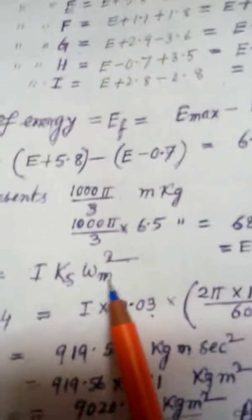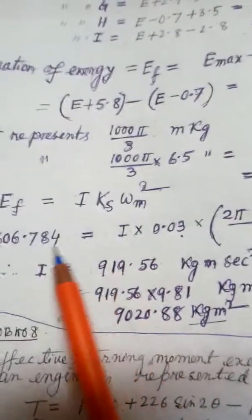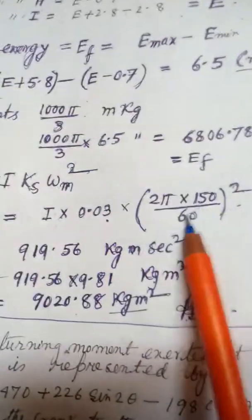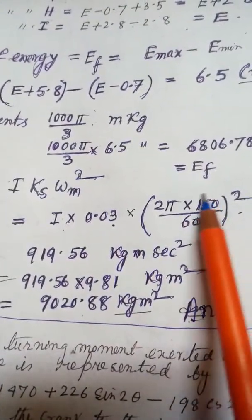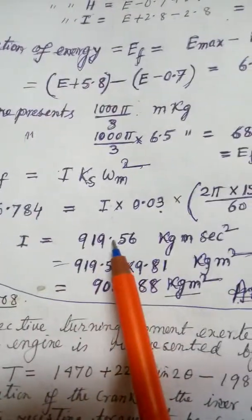This is 2 pi n by 60. Omega mean, it is given 150 is the mean rpm. 2 pi times 150 by 60, whole squared. Actually I will be equal to this much.